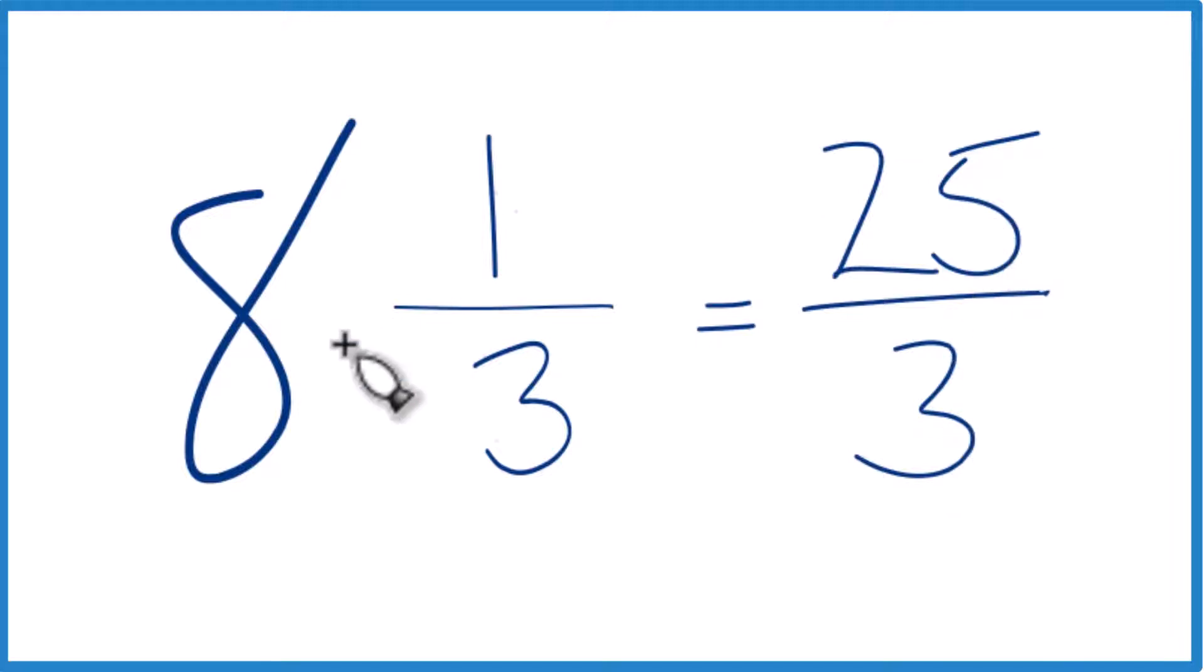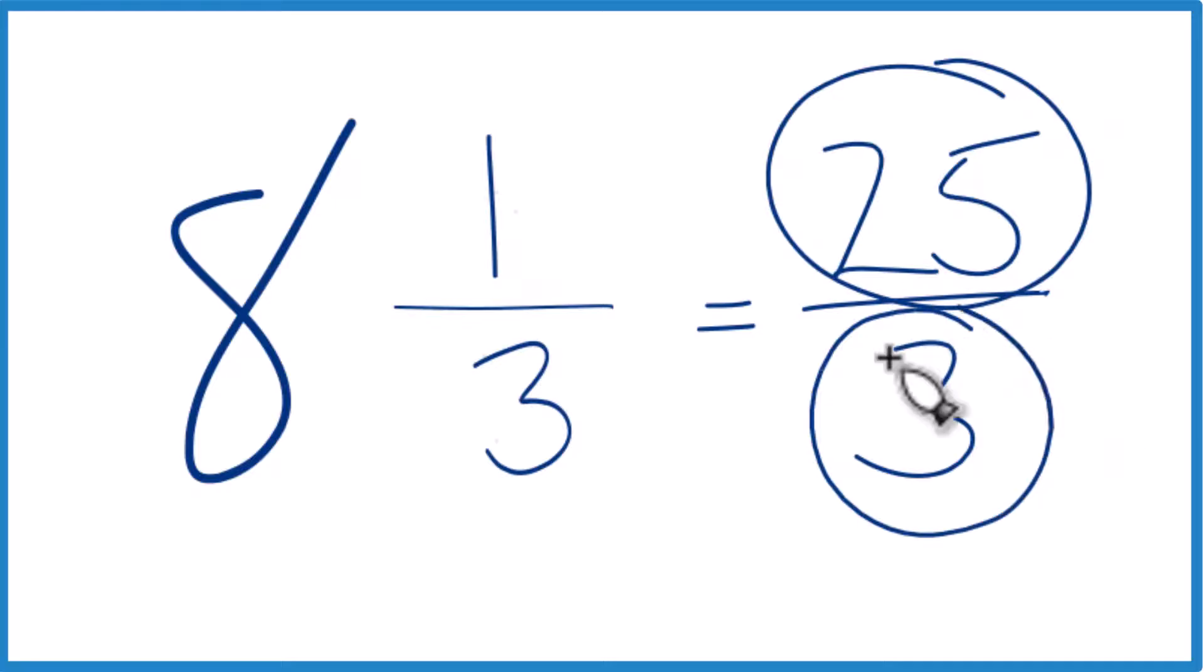Let's do it again. 8 times 3, that's 24, plus 1, that's 25, that's the numerator. We just brought the denominator across.